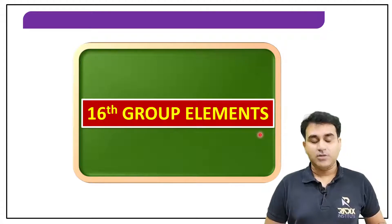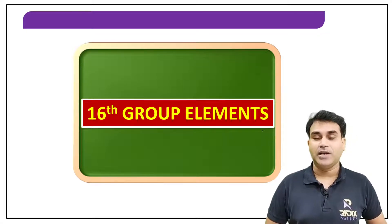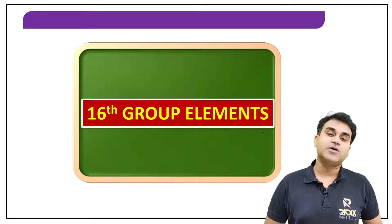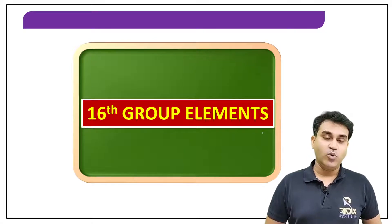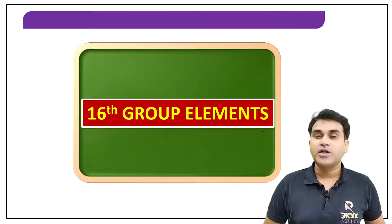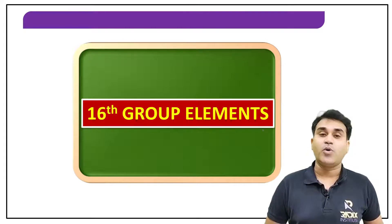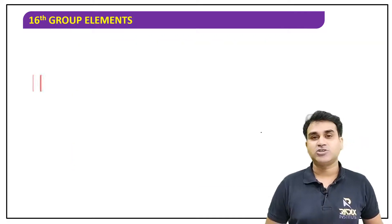Hi, welcome back. So now let's talk about the 16th group elements. The initial members of the 16th group are called chalcogens. Chalcogens means ore-forming elements. This is a very important group because it contains two important elements — oxygen and sulfur. Let's start our discussion.